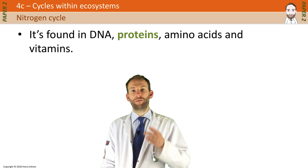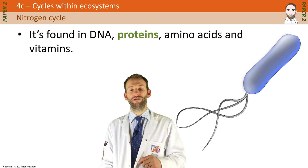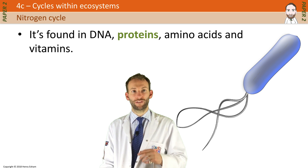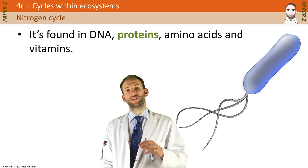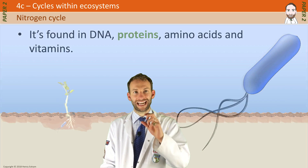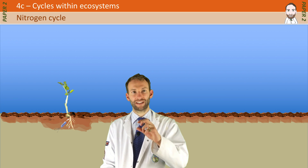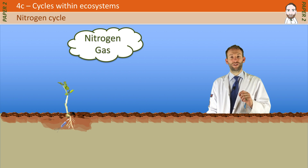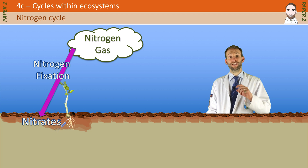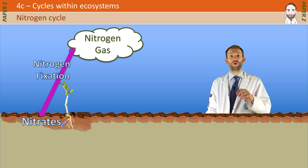Bacteria can convert nitrogen into a useful form called nitrates. Starting with nitrogen gas in the air, the nitrogen gas is converted into nitrates in a process called nitrogen fixation. This is done by bacteria in the soil or in the root nodules of particular plants called legumes, which have these very special bacteria living inside their roots.